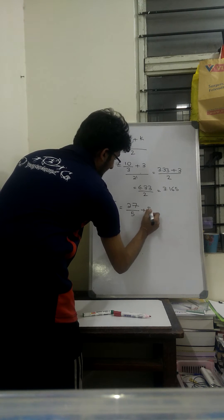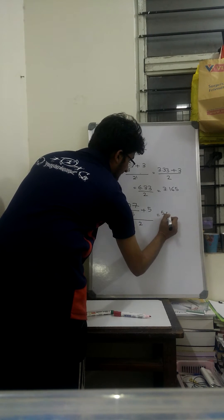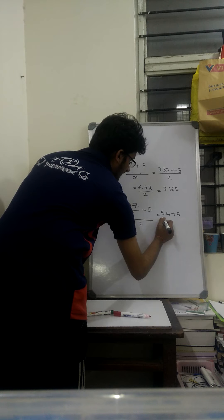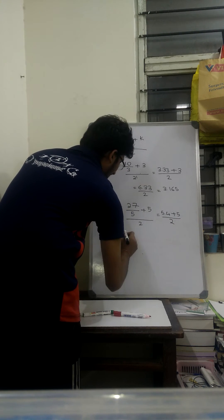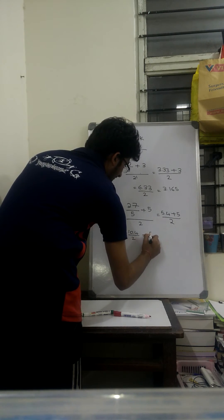I add it with 5 and divide the whole thing by 2. 27 by 5 is 5.4 plus 5 whole divided by 2. 5.4 plus 5 is 10.4 divided by 2 which is equal to 5.2.